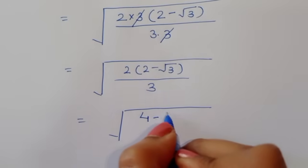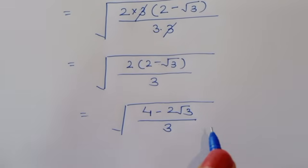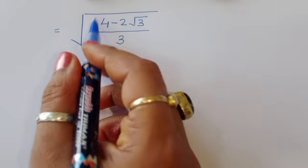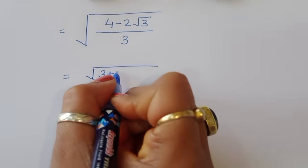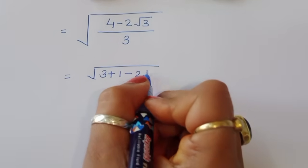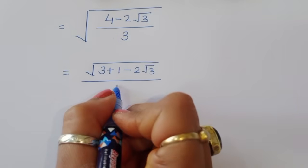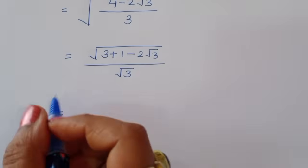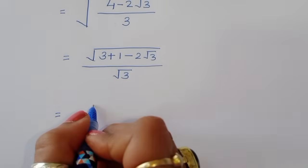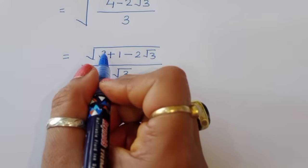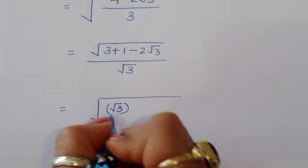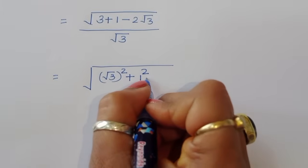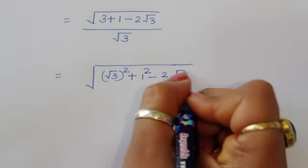This gives us square root of (4 minus 2 square root of 3) divided by 3. We rewrite 4 as 3 plus 1, so we have square root of (3 plus 1 minus 2 square root of 3) divided by square root of 3. We then separate: we can write 3 as (square root of 3)², and 1 as 1².